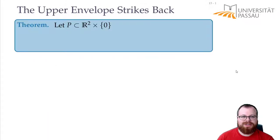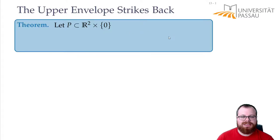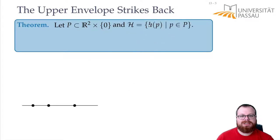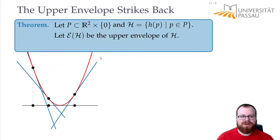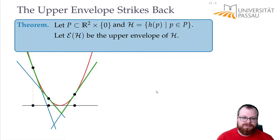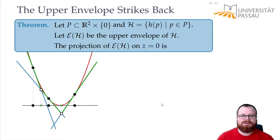What that gives us I want to show you now with the following theorem. We have a point set in the plane, we move it to three dimensions by assigning z coordinate zero to all of them. Then we have our set of planes defined by the formula from before, and a unit paraboloid. Now I want to look at the upper envelope of this set of planes. The upper envelope intersects at some points, or if we have planes, also at some segments, and those we want to project down to z equals zero. Before I tell you what we get, I want to show you a demo.